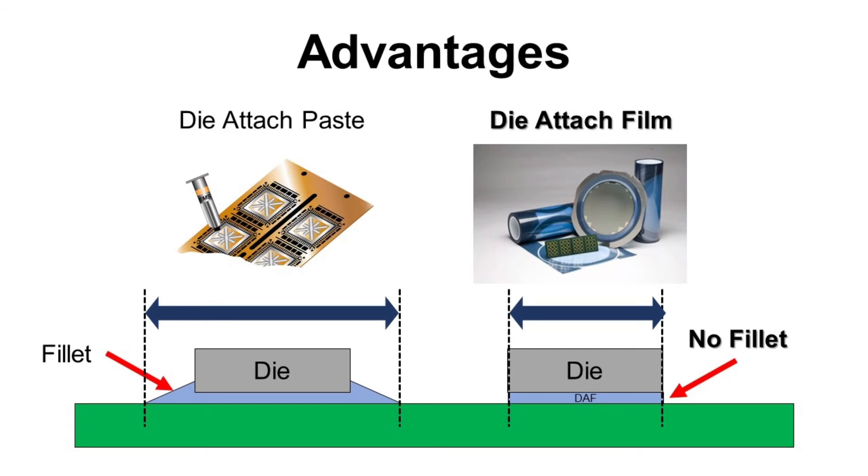Also, bondline thickness of die-attach paste is determined by process parameters. But die-attach film is freeform and thickness of die-film is already determined. It is already applied on the back side of die, then attached on substrate or die. So it can be used for die stack.